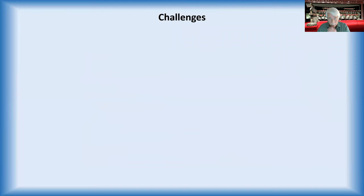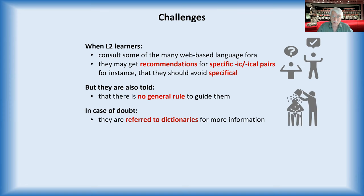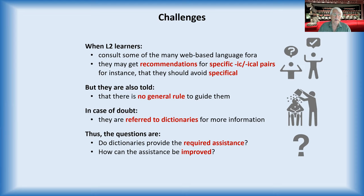When they consult, if they have a problem, for example some of the web-based language forums, they'll get recommendations for specific adjective pairs, but they'll also be informed that there's no general rule. So that means that if they cannot get an answer, they're referred to dictionaries. So how do they perform? And how can we actually improve them?